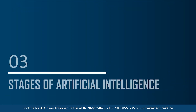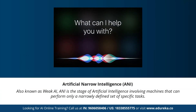Now let's understand the different stages of artificial intelligence. A lot of videos and articles state that artificial general intelligence, artificial narrow intelligence, and artificial super intelligence are the different types of AI — but to be more precise, these are actually the three different stages of AI. The types of AI are completely different from the stages of AI. Under the stages, we have artificial narrow intelligence, artificial general intelligence, and artificial super intelligence.